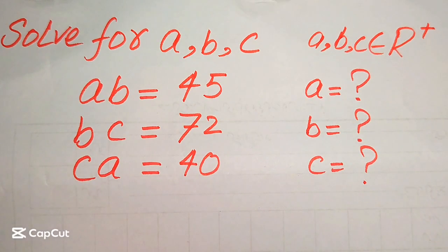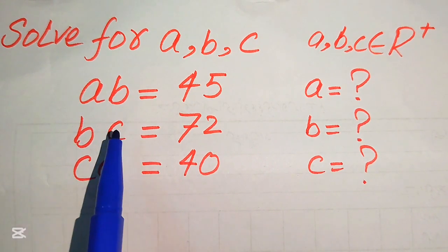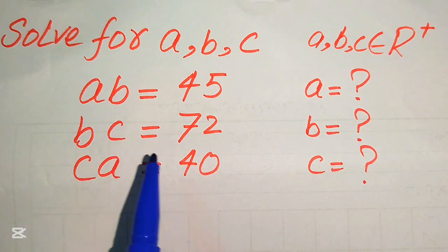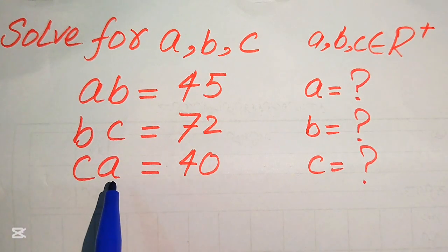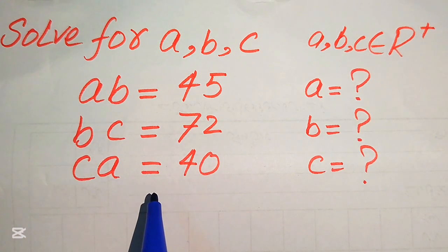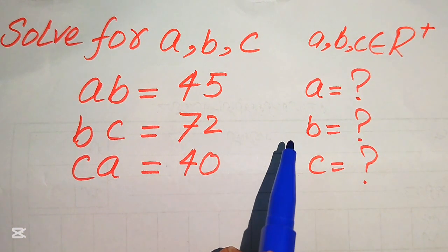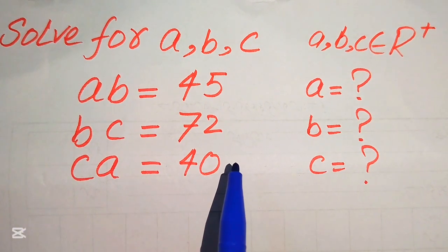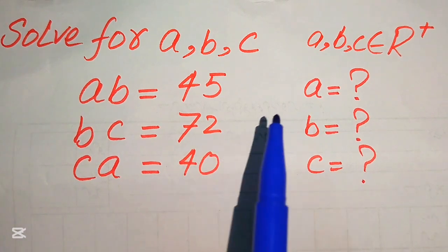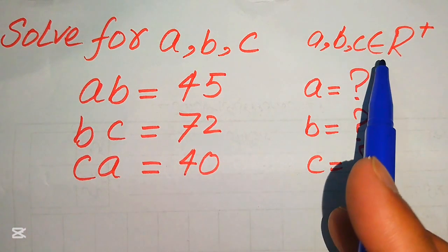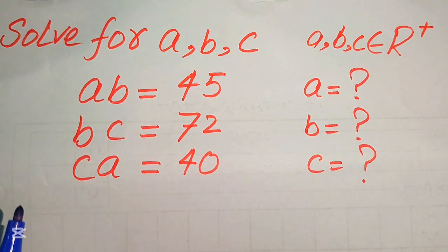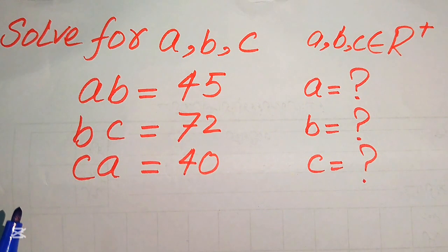Hello everyone, welcome to solve this nice math or linear algebra problem. We have AB equals 45, BC equals 72, and CA equals 40, and we solve this problem for the values of A, B, and C. One condition to remember is that A, B, C must be positive real numbers — we solve for positive real values of A, B, and C.